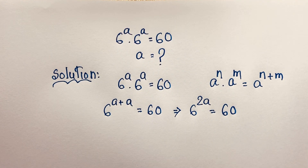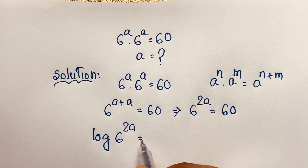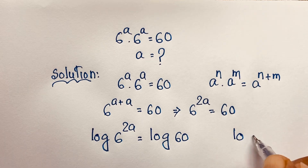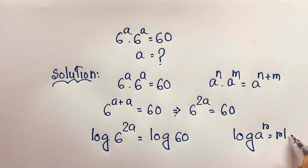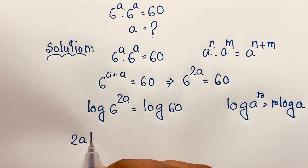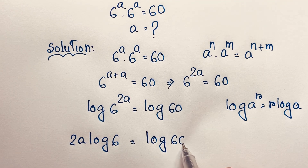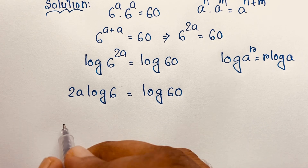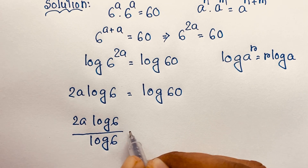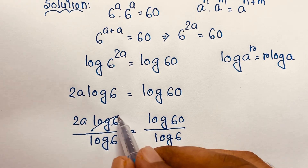Then I apply natural log to both sides. So log 6 to the power 2a is equal to log 60. Now according to the log power rule, log a to the power r equals r log a. If I apply this formula here, it will be 2a log 6 is equal to log 60. Now I divide both sides by log 6, so 2a equals log 60 over log 6.